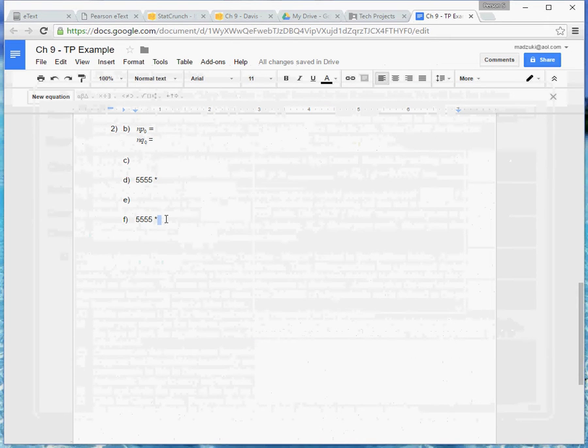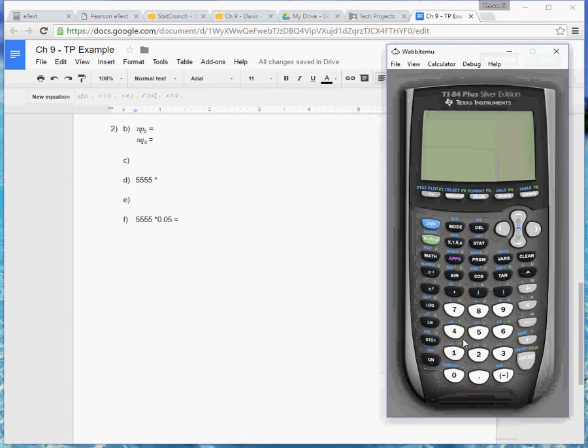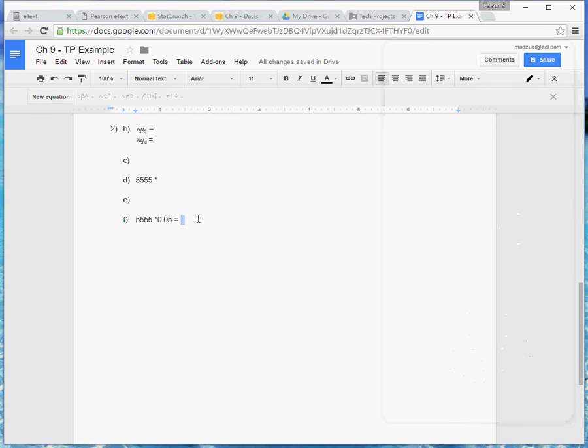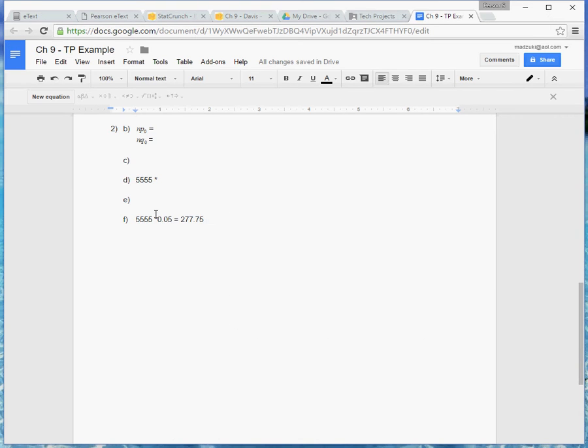As far as showing the work, I would do the 5,555 times 0.05 and see what I get. I have the calculator open so we can go ahead and do that. Turn that on. Clear out this old stuff. So 5,555 times 0.05 is 277.75. And I believe they just want us to leave a decimal on that, but we can go check. So, and I think I might have put that in the wrong spot. Did I? Yes, I did.